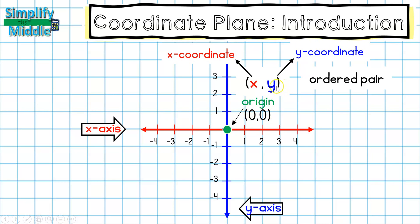In an ordered pair, the first number tells you where you are on the x-axis, or your x-coordinate, and the second number tells you where you are on the y-axis, or your y-coordinate. Because at the origin I'm at zero for my x-axis and zero for my y-axis, I'm located at the origin: (0, 0).